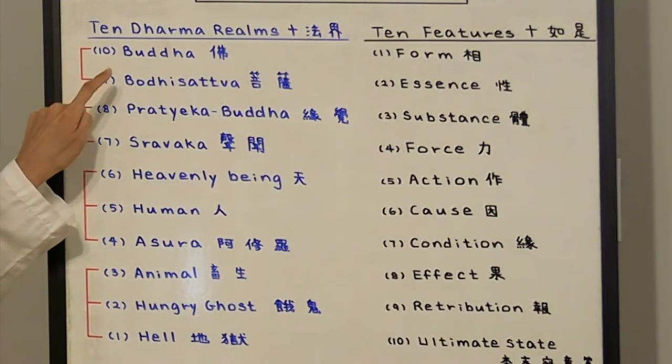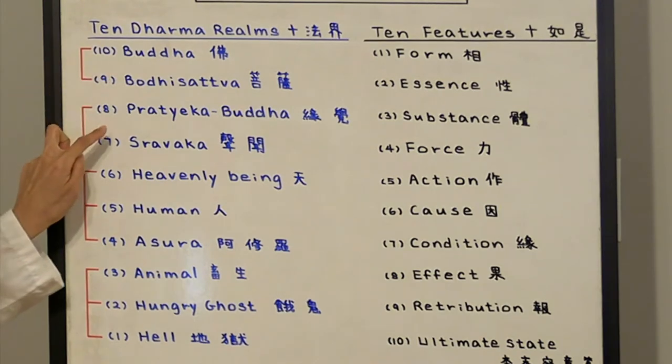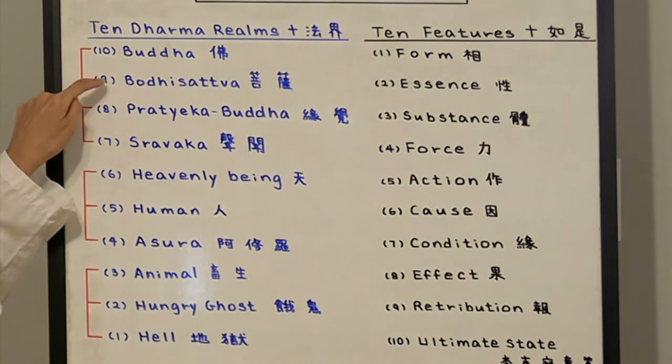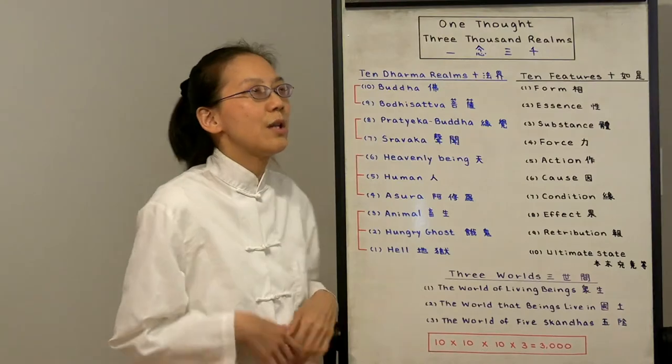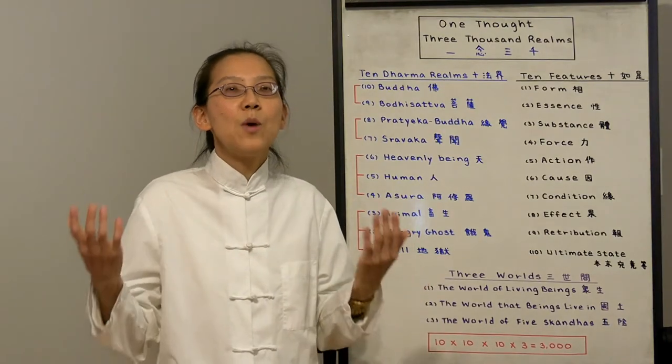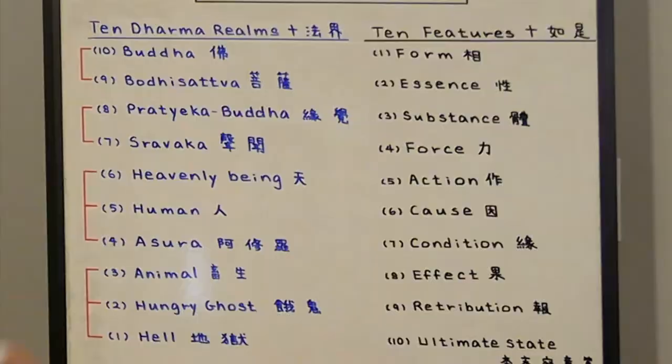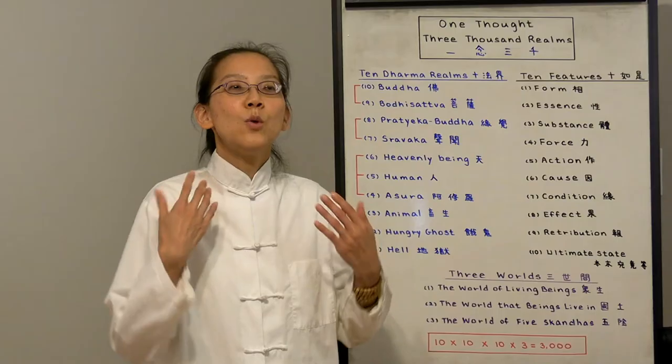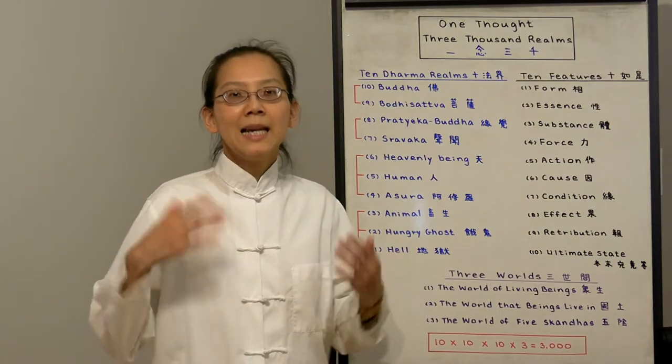Then we have number nine, Bodhisattva. Not only do they want self-enlightenment, they want to enlighten others. So they're full of compassion and want to deliver all other sentient beings. Lastly we have Buddha, who has perfect supreme enlightenment.